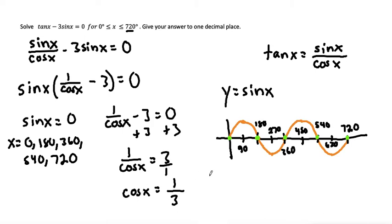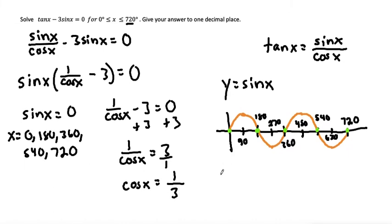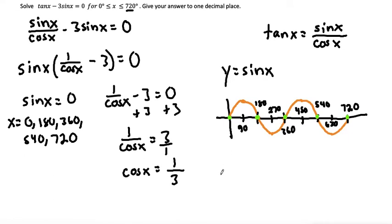Next, we want to draw the graph y is equal to cosine of x. Let me give myself a little more space. Here we go. So if we draw the y is equal to cosine of x, we can draw a sketch of that. Let me actually use the line tool this time. Okay,